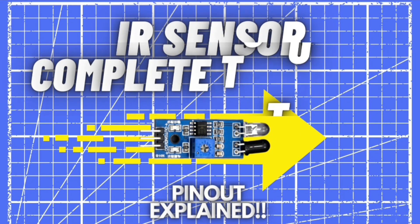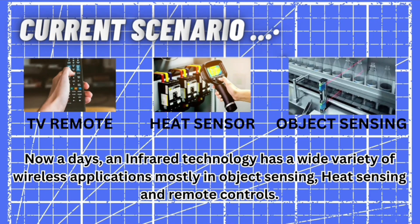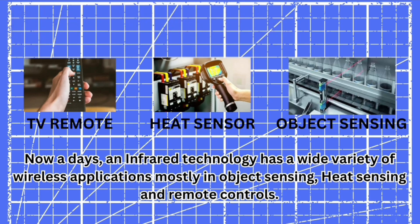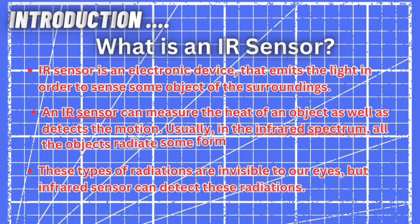Let's start our complete tutorial on IR sensors. First, let's take a look at the current scenario where IR sensors are being used nowadays. Infrared technology has a wide variety of wireless applications, mostly in object sensing, heat sensing, and remote controls. In the electromagnetic spectrum, the infrared portion is divided into three regions: near infrared, mid infrared, and far infrared.